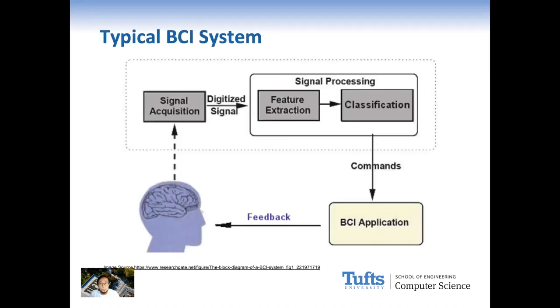A brain-computer interface is a communication system that allows real-time interaction between the human brain and external devices. Traditionally, human-computer interaction relies on keyboard, mouse, and touchpad. In contrast, a BCI system aims to achieve the interaction implicitly via the user's brain activity.